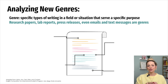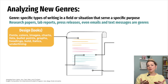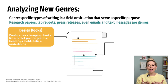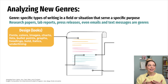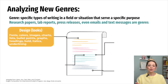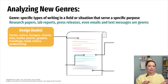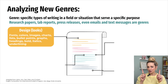When writing in new genres, we want to look at four things. First, we have D for Design, or how the piece of writing looks. This can include fonts, colors, images, charts, lists, bullet points, graphs, headings, bolding, italics, etc. — anything visual.